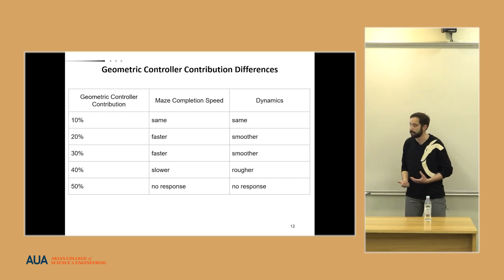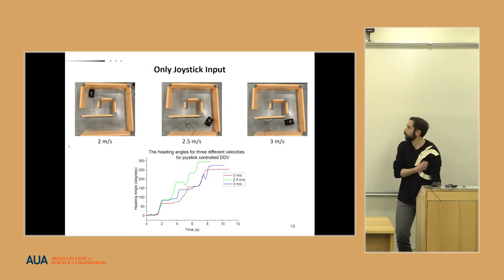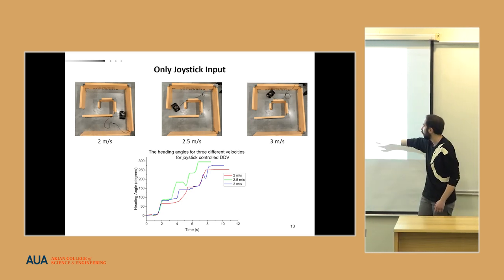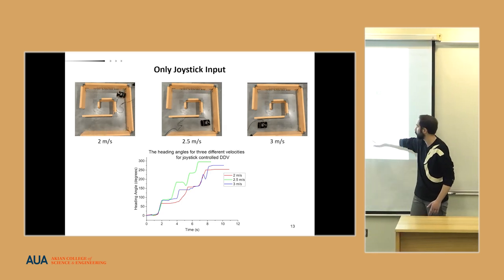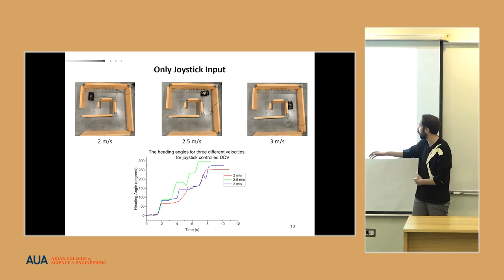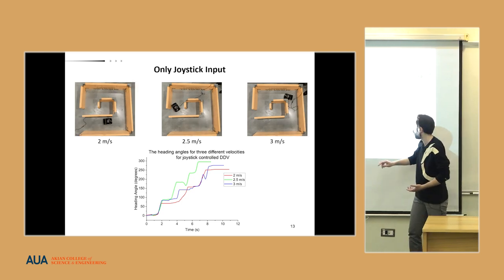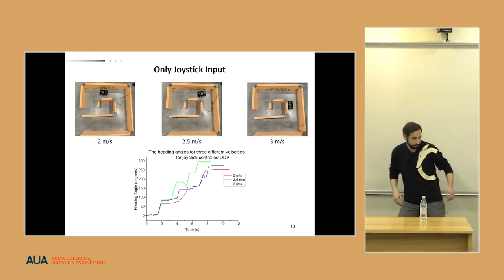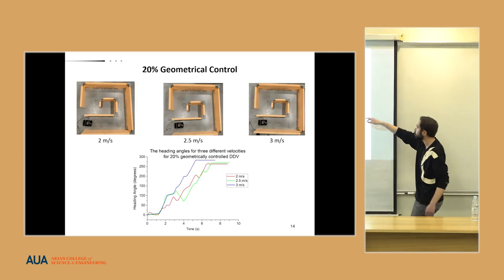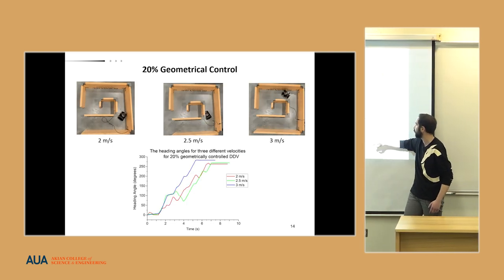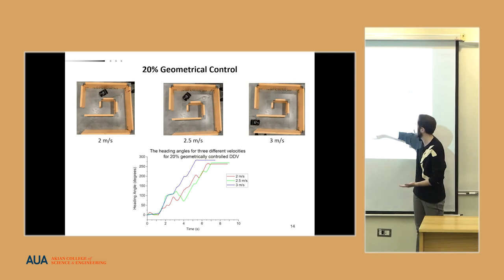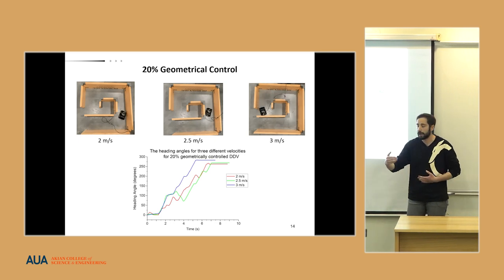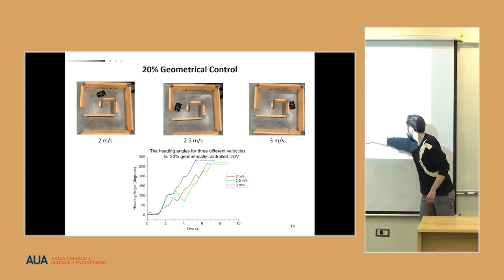Talking about the joystick, here we can see that we have sharp increases at three velocities, indicating that our user has to stop at each turn, which indicates sharp increases in the heading angle. By going next, we can see that with 20 percent geometrical controller, the sharp increases are reduced. We have smoother increases and shorter time reaching the endpoint of our maze.